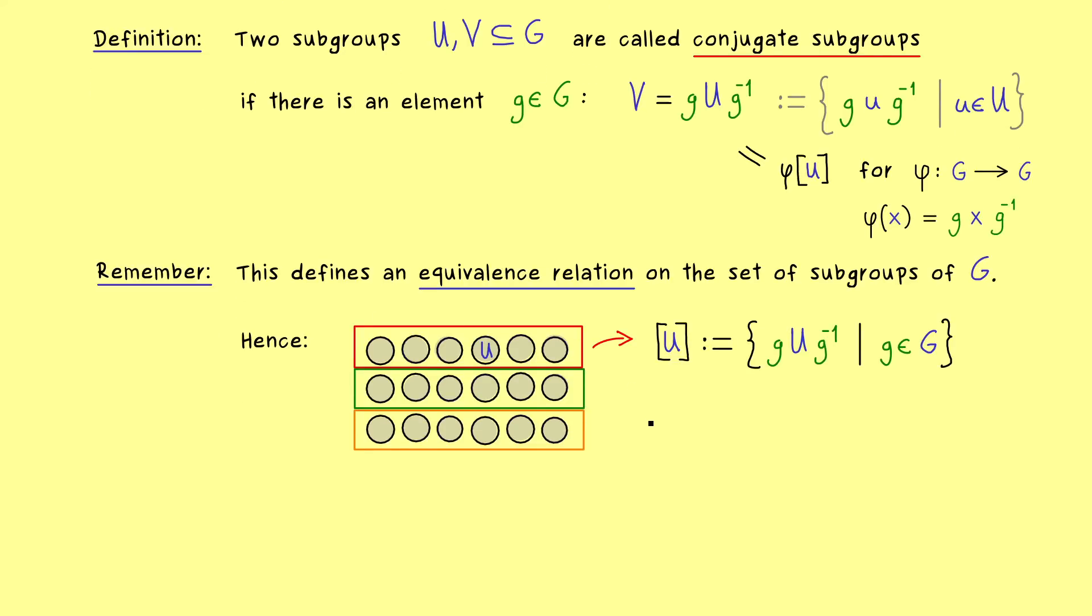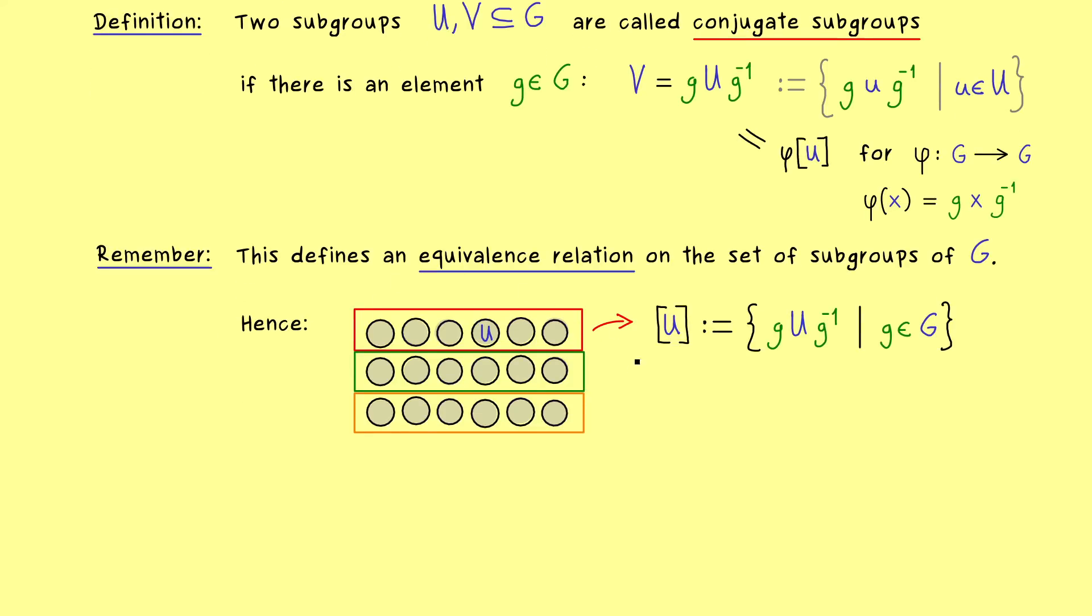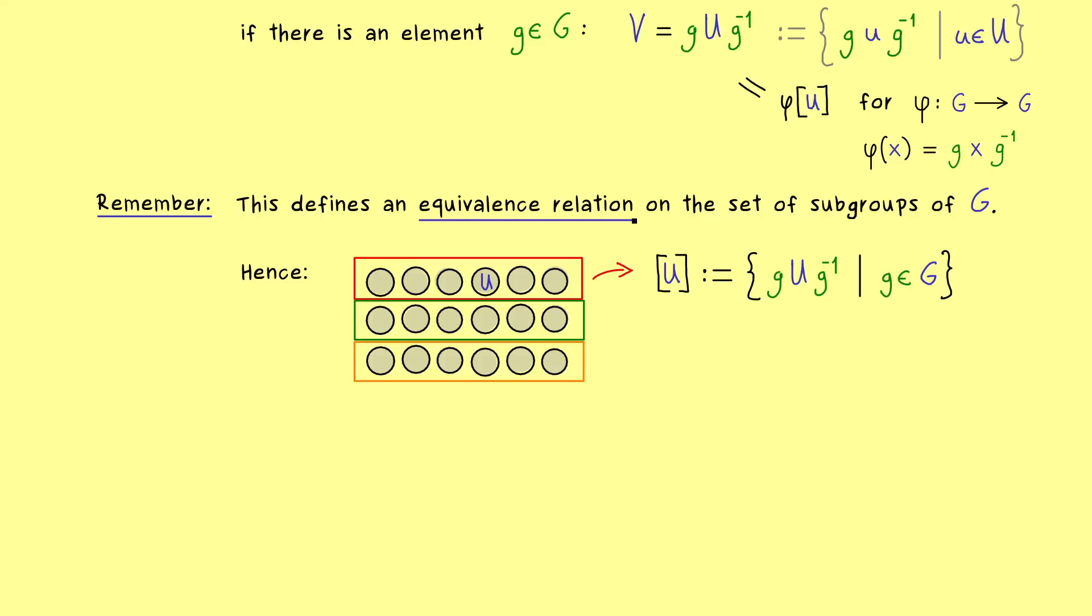However as you can see in the picture we could definitely have more than just one equivalence class for a group G. In fact we immediately see that the whole thing is trivial if we consider an abelian group G.